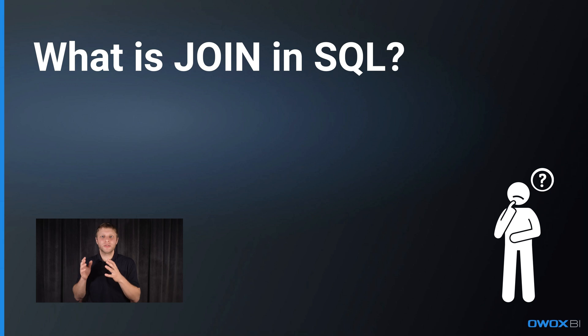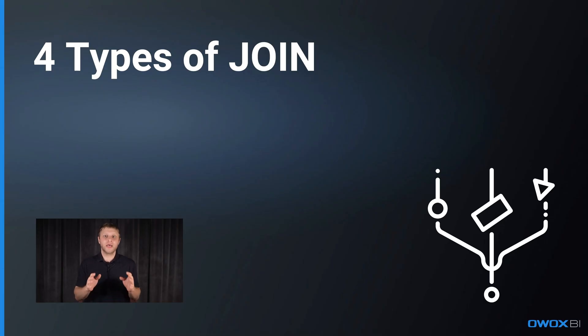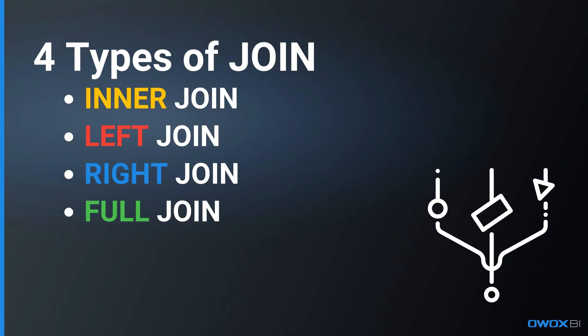Let's start with what is Join in SQL. In short, Join is used when you need to retrieve data from multiple tables — basically when you merge rows from two or more tables based on a related column between them. There are four main types of joins: Inner Join, Left Join, Right Join, and Full Join, each serving different purposes.